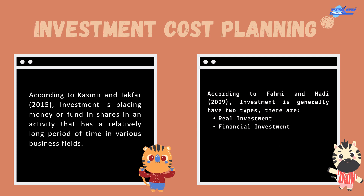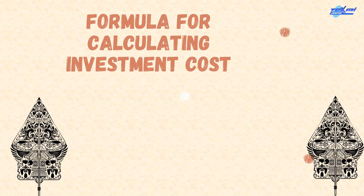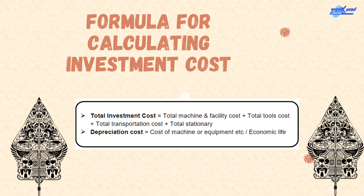According to Fahmi and Hadi, investment generally has two types. First, real investment, which generally involves tangible assets such as land, machinery, or factories. Second, financial investment, which in general involves written contract assets such as common stock and bonds. And this is the formula for calculating investment costs.